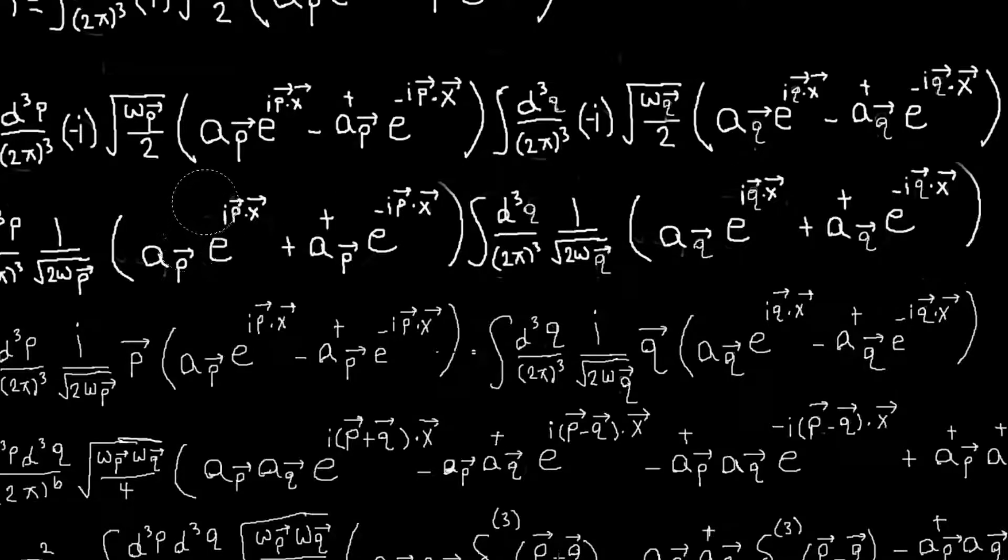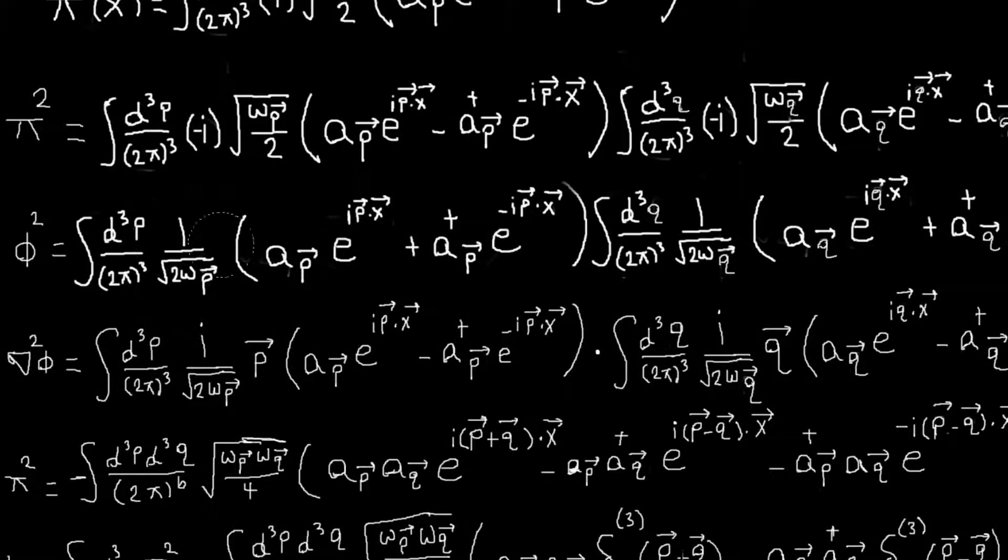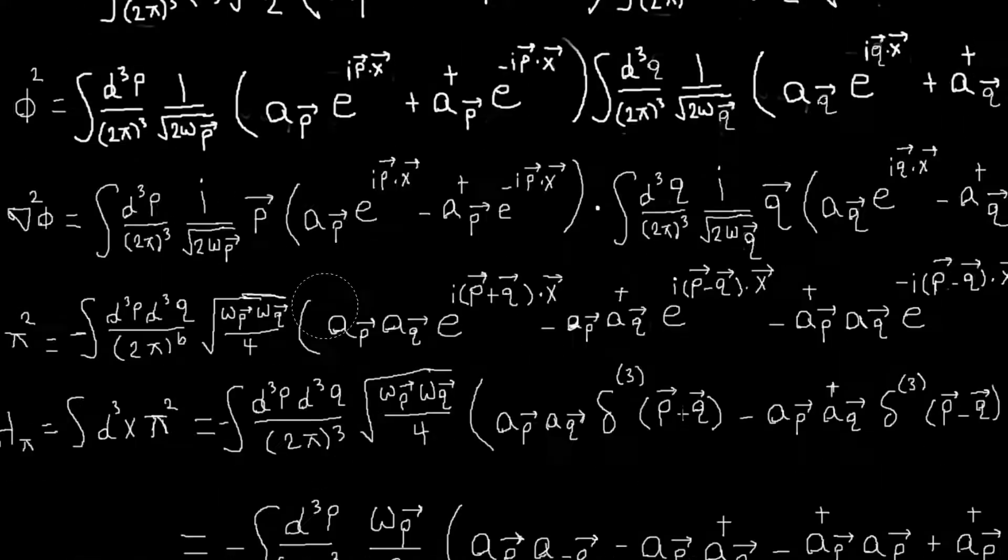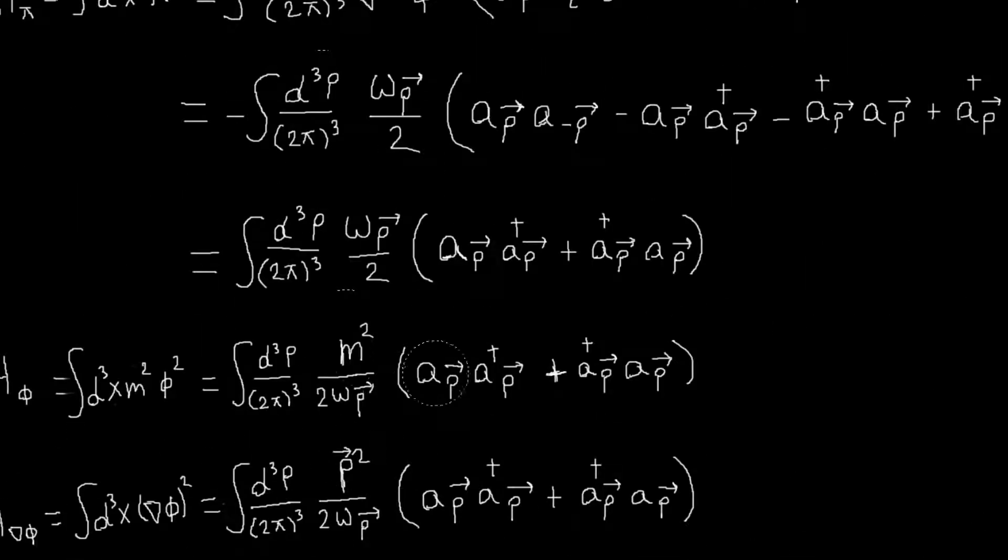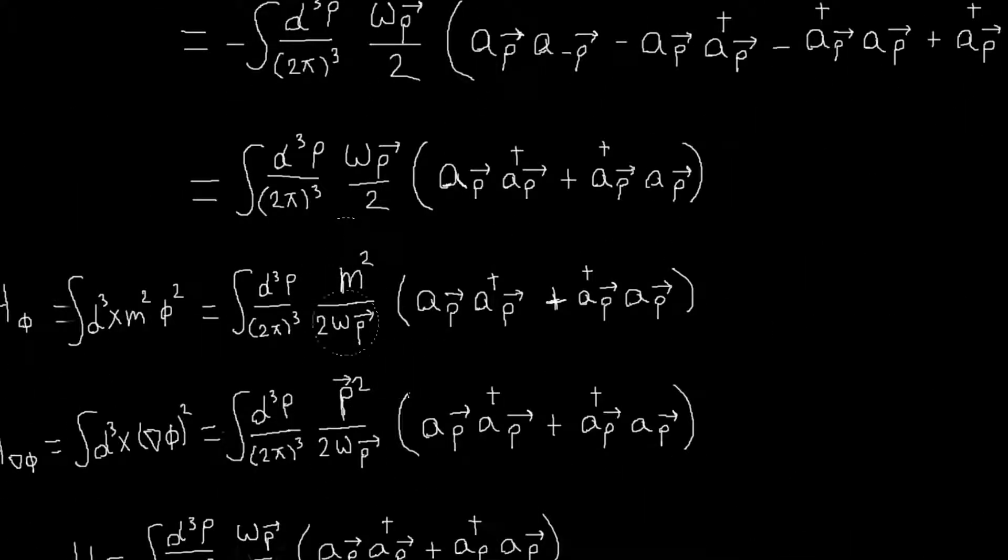So we only have to worry about the cross terms. So this times this term, and this times this term. And so the prefactor out in front will be different. So that's why we have that difference.